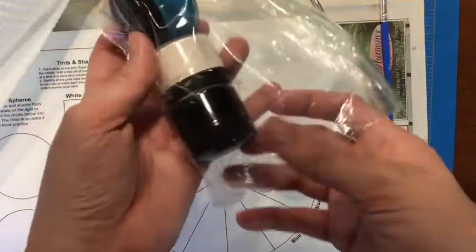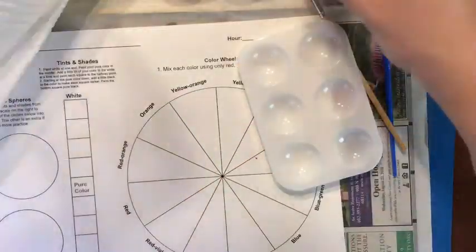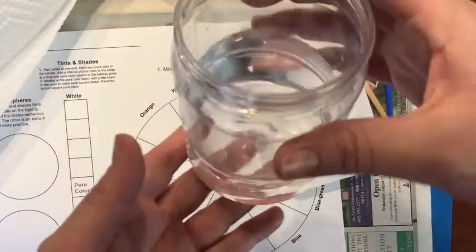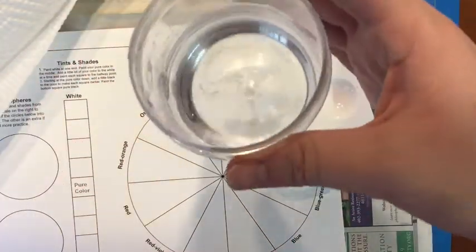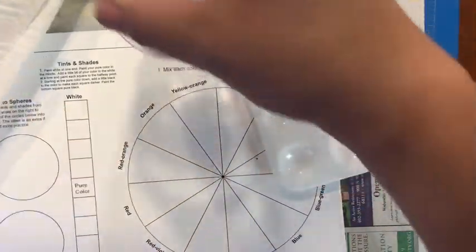Instead of using your watercolors, you're going to use your paints that are in your Ziploc bag, so you'll want to take those out as well. Then get a container, a recyclable container or a solo cup, and fill it about half full with water to rinse your brush out.